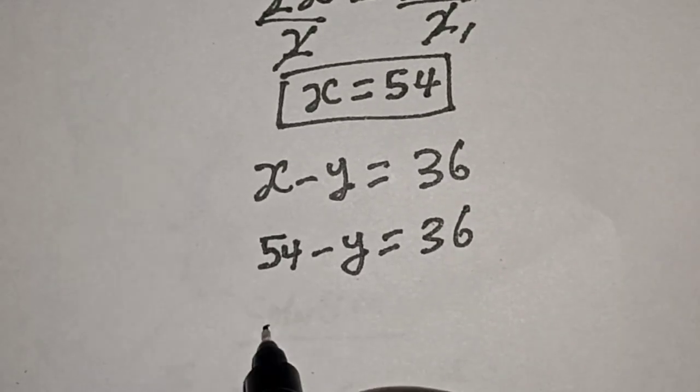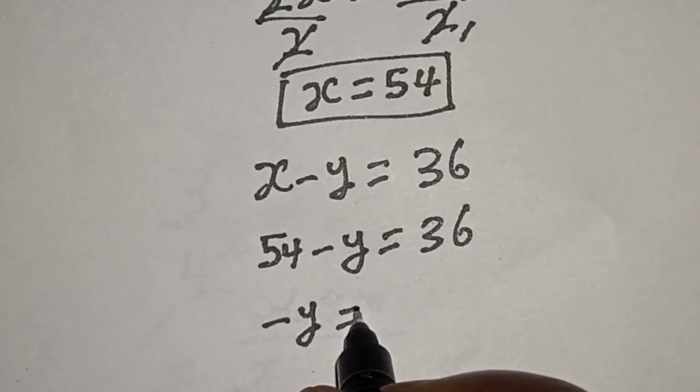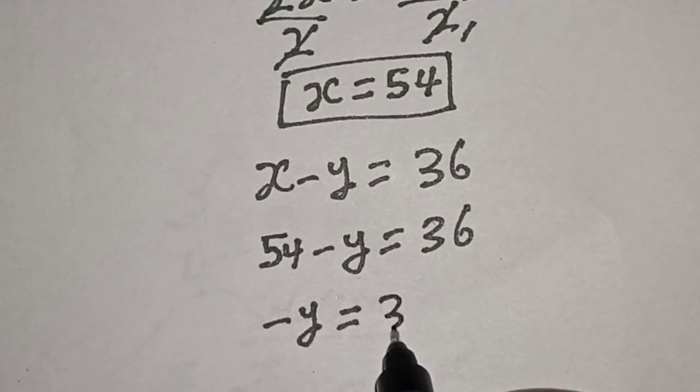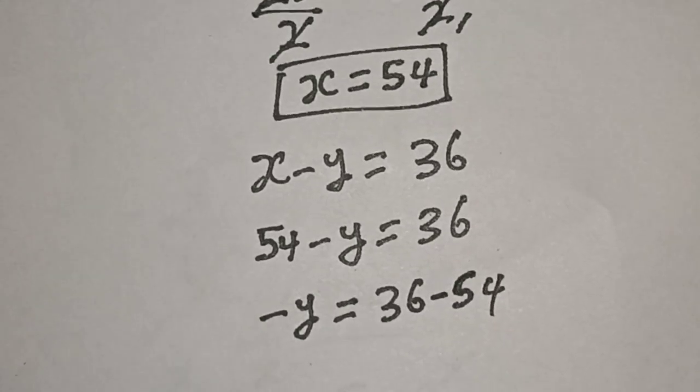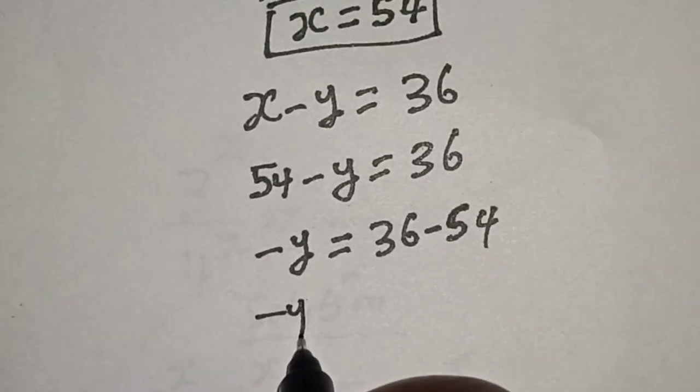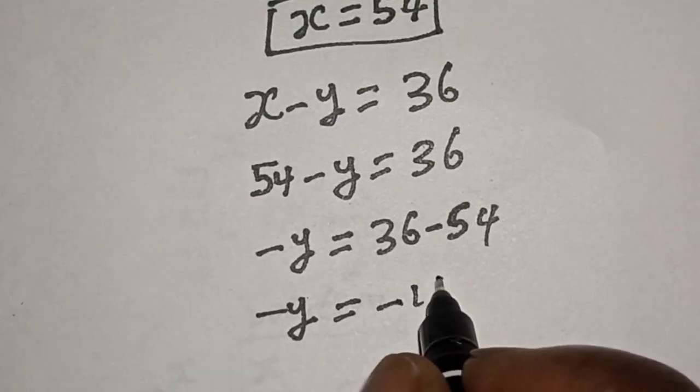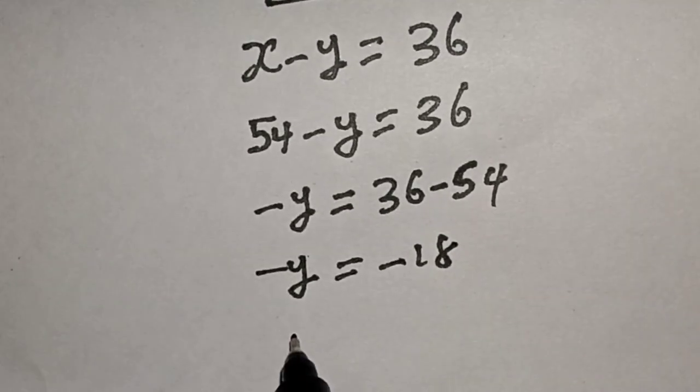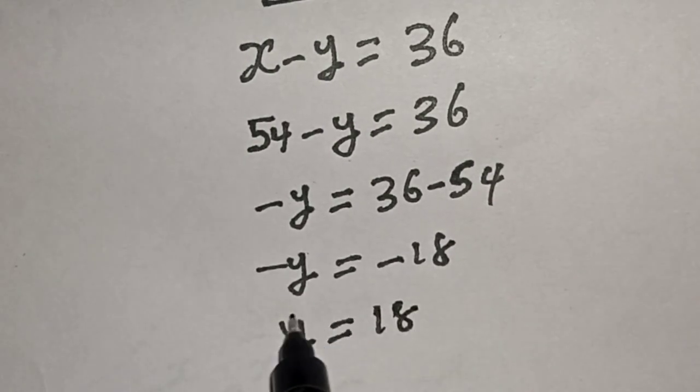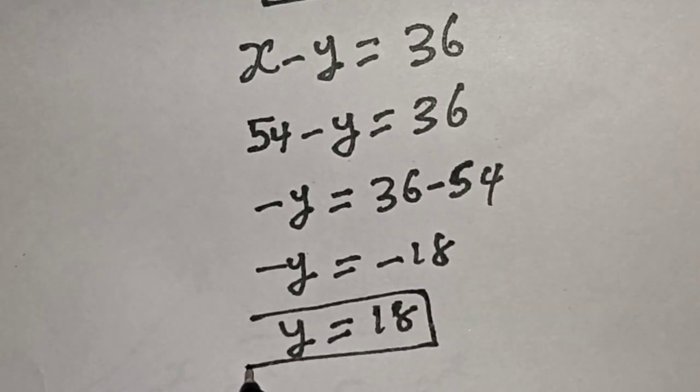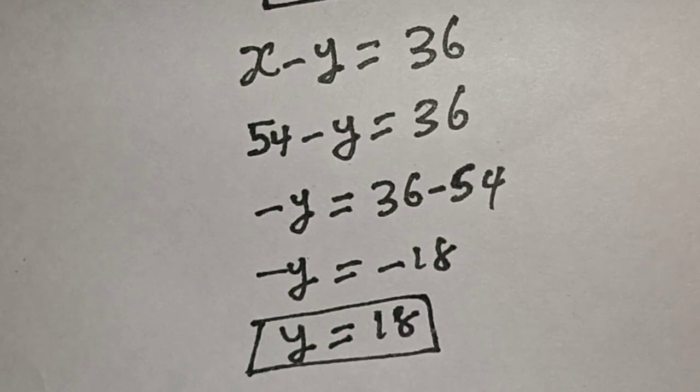Subtract 54 from both sides: negative y equals 36 minus 54, which equals negative 18. Therefore y equals 18. We've gotten the value of y which is 18.